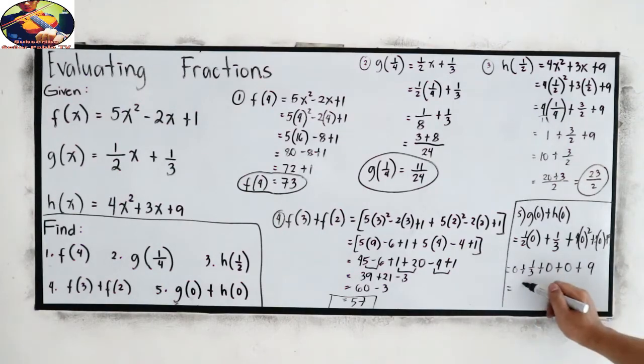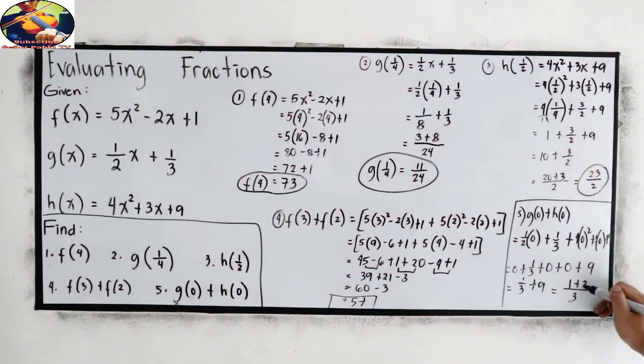So, 1 third plus 9. Our LCD is 3. So, we have 1 plus 3 times 9, which is 27. Which gives us 28 over 3. So, the final answer is 28 over 3.